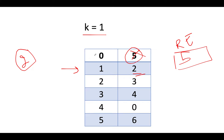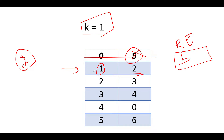The takeaway from this example: the zeroth index cannot contribute to the answer, k minus one index cannot contribute to the answer, but the kth element can contribute to the answer. Remember these two points — k minus one will not contribute, and the kth index may contribute.